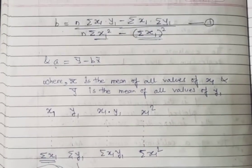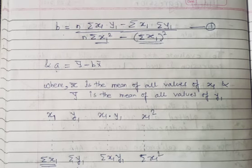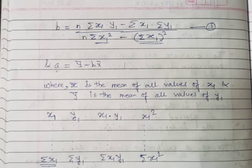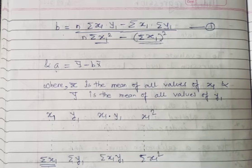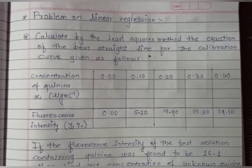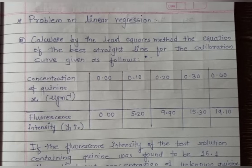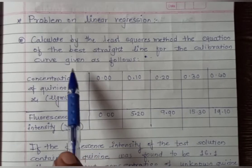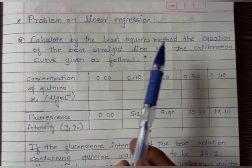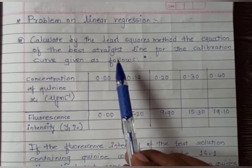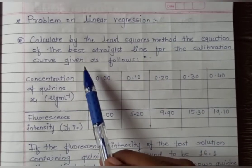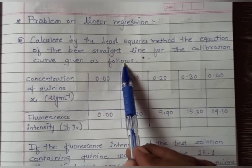The linear regression method is used to find the best straight line y = bx + a. Before that, we find the slope and intercept values. Now we will solve a problem using the linear regression method. The problem asks us to calculate by the least squares method the equation of the best straight line for a calibration curve.